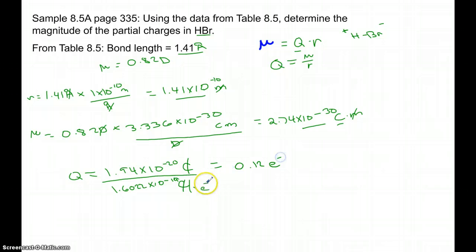Put this into my calculator and I will get 0.12, and that is the fraction of an electron, how much of an electron was transferred. So if I go back up here, now I know the magnitude of these partial charges are positive 0.12 and negative 0.12.